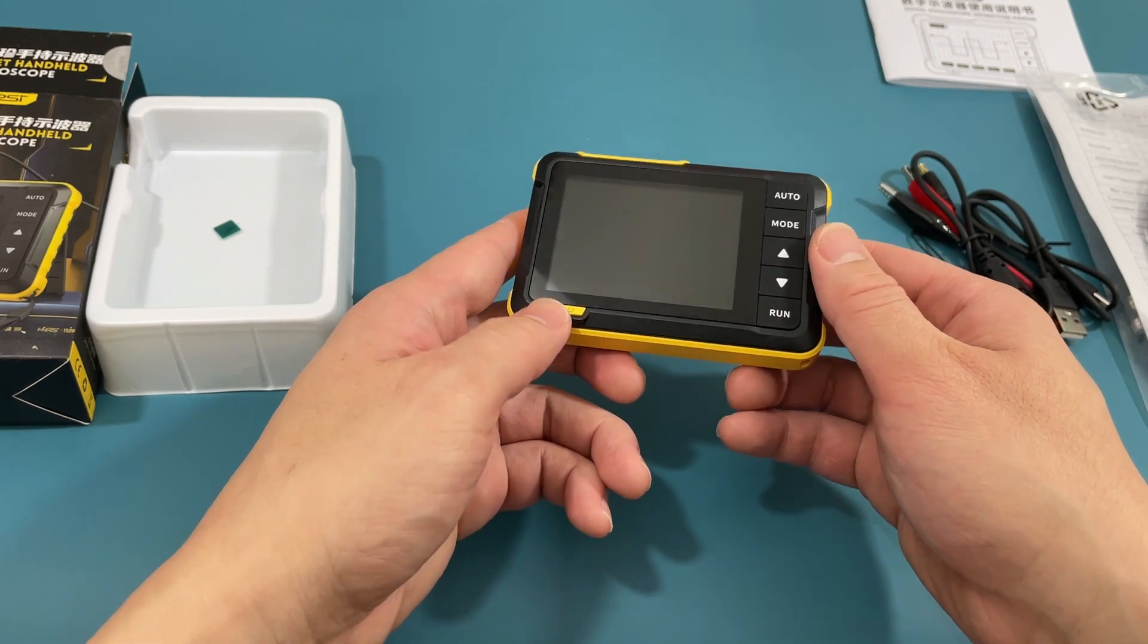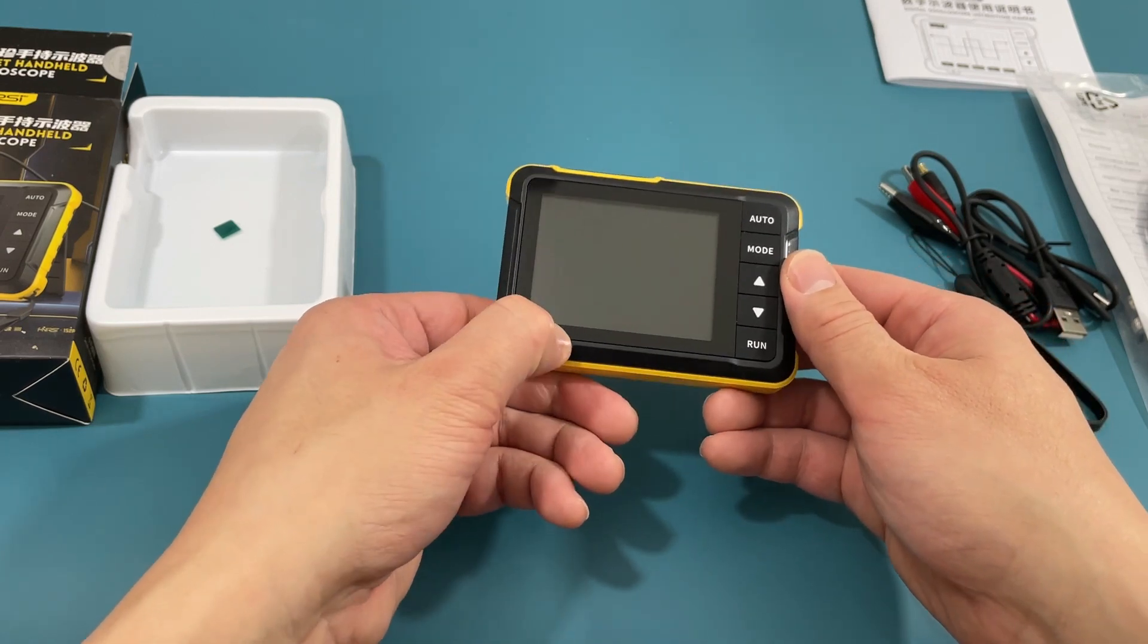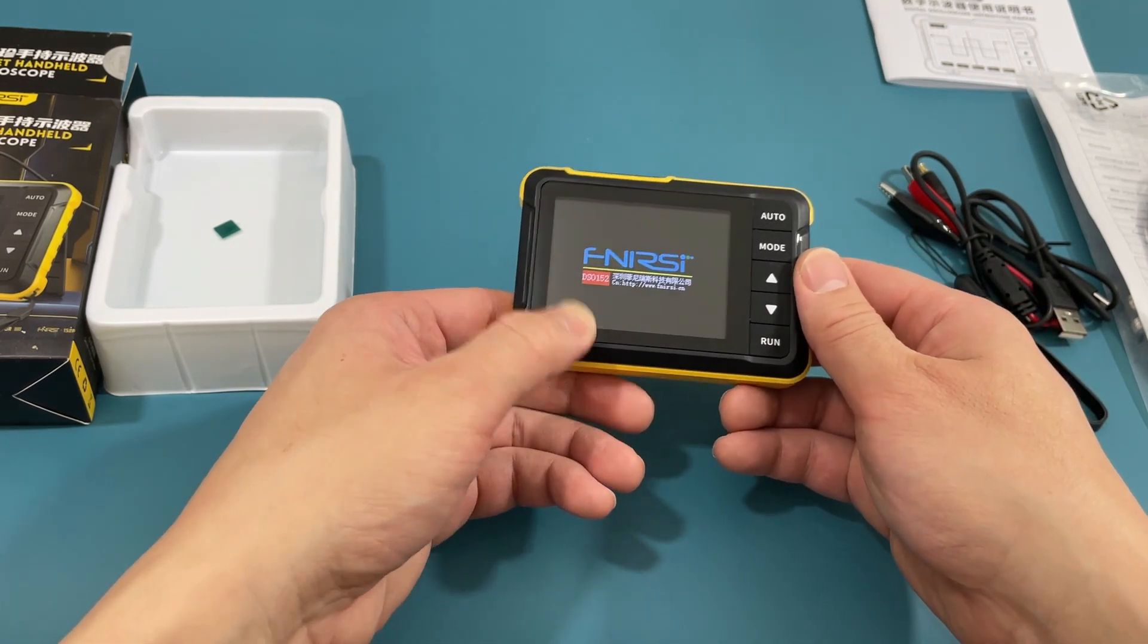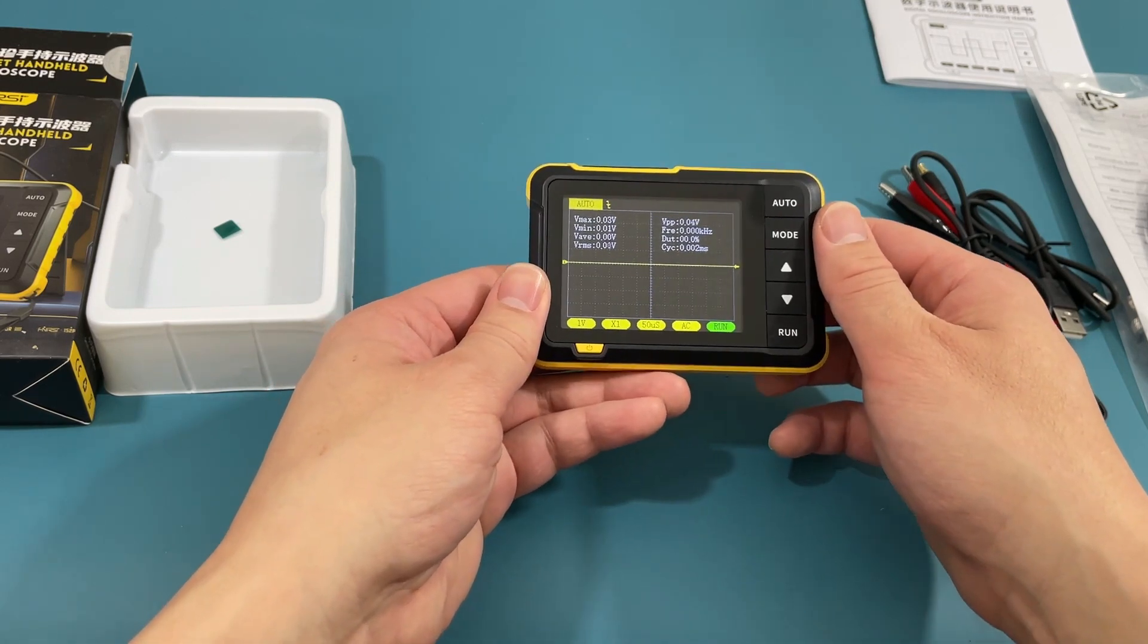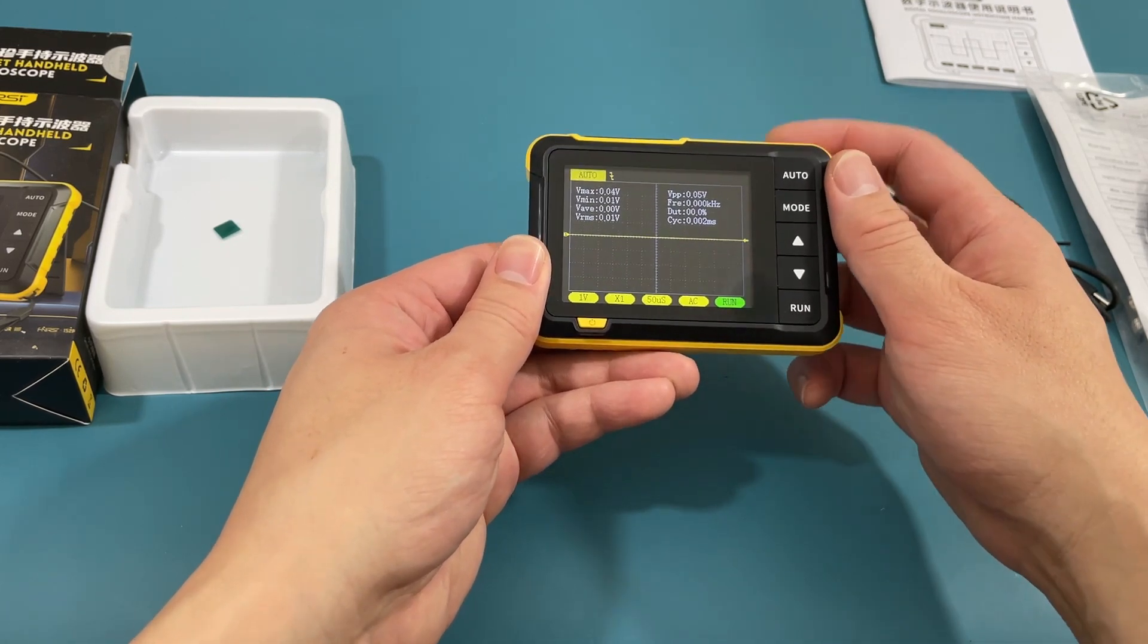To turn it on, press and hold the yellow switch button for a couple of seconds. It has a 2.8-inch high-definition LCD display screen. Very nice.